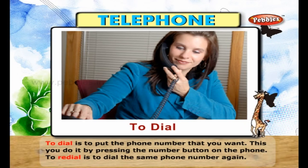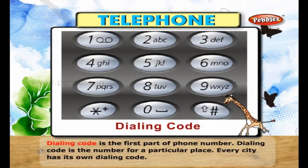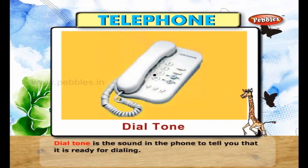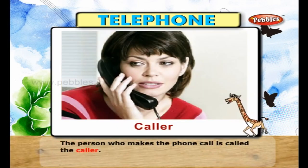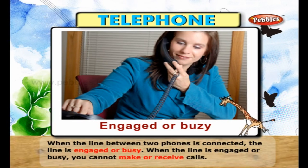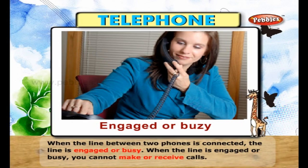To redial is to dial the same phone number again. A dialing code is the first part of the phone number — the number for a particular place. Every city has its own dialing code. A dial tone is the sound in the phone to tell you that it is ready for dialing. The person who makes the phone call is called the caller. When the line between two phones is connected, the line is engaged or busy, and you cannot make or receive calls.